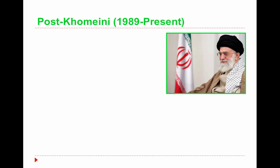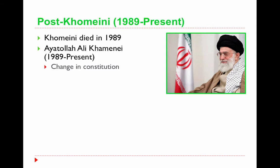Post-Khomeini, from 1989 to the present: the first Supreme Leader Khomeini died in 1989. Since then, the Supreme Leader has been Ayatollah Ali Khamenei. The constitution originally said that after Khomeini's death, his authority would go to a leadership council of two or three senior clerics. However, once Khomeini died, his followers did not trust that group and changed the constitution to select a new Supreme Leader in Ali Khamenei, a cleric from the middle rank who they thought wouldn't bring about too drastic reforms.